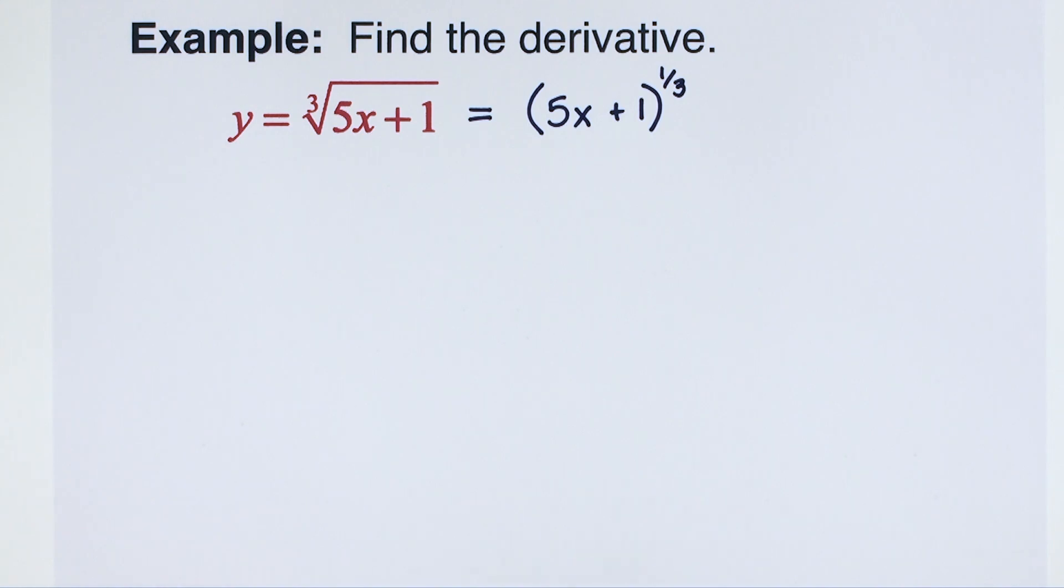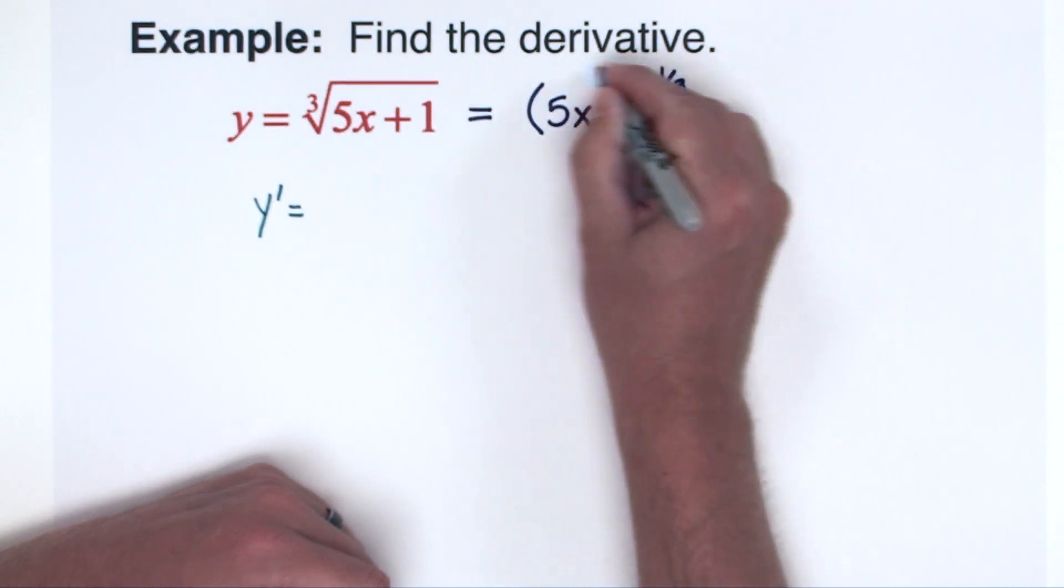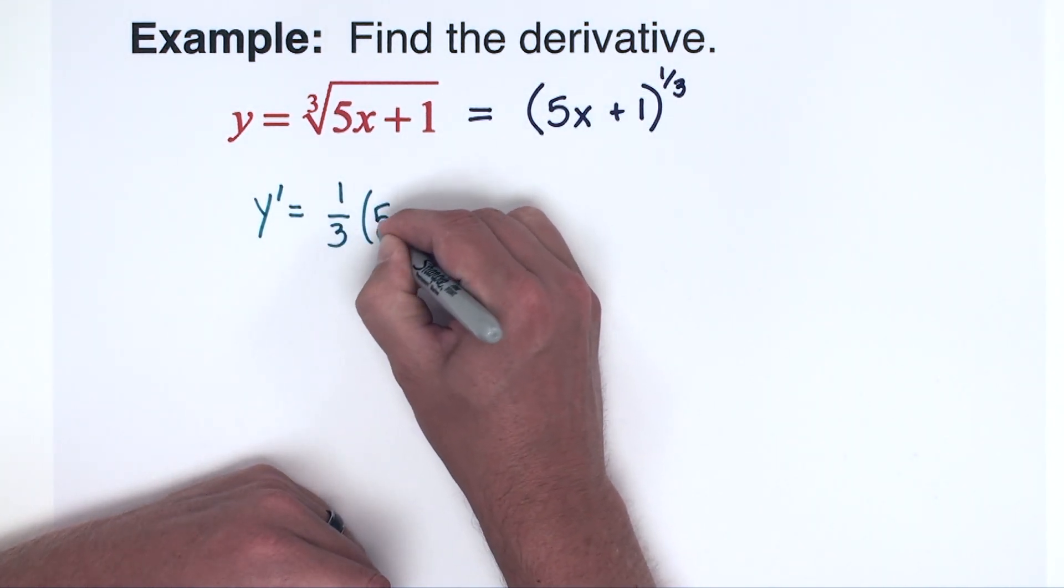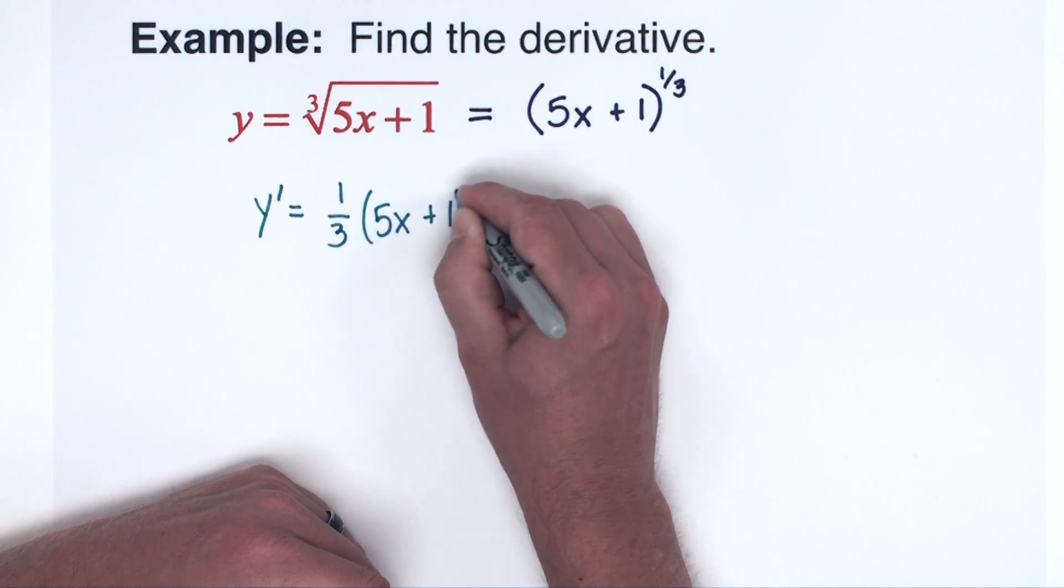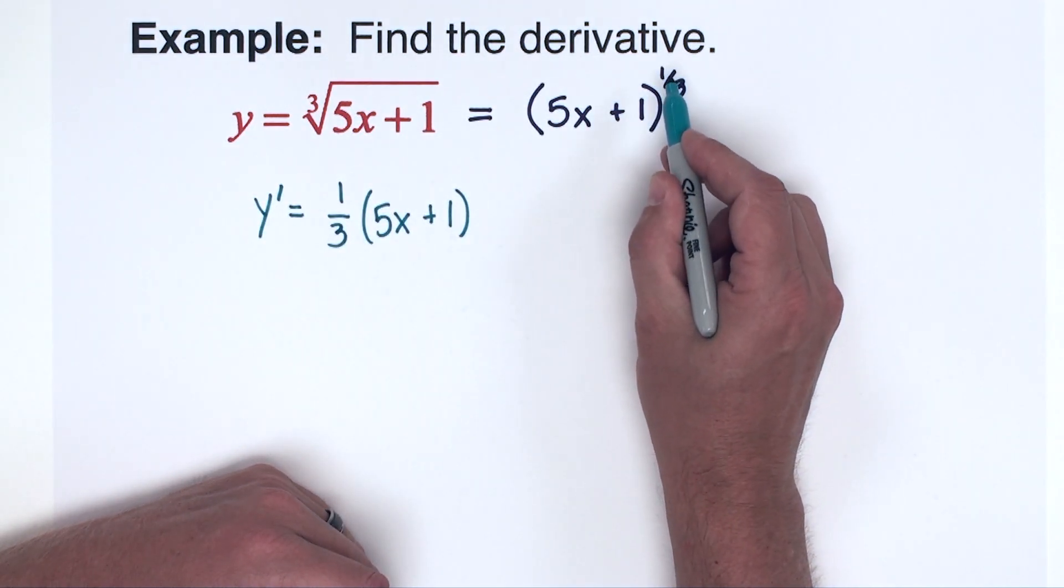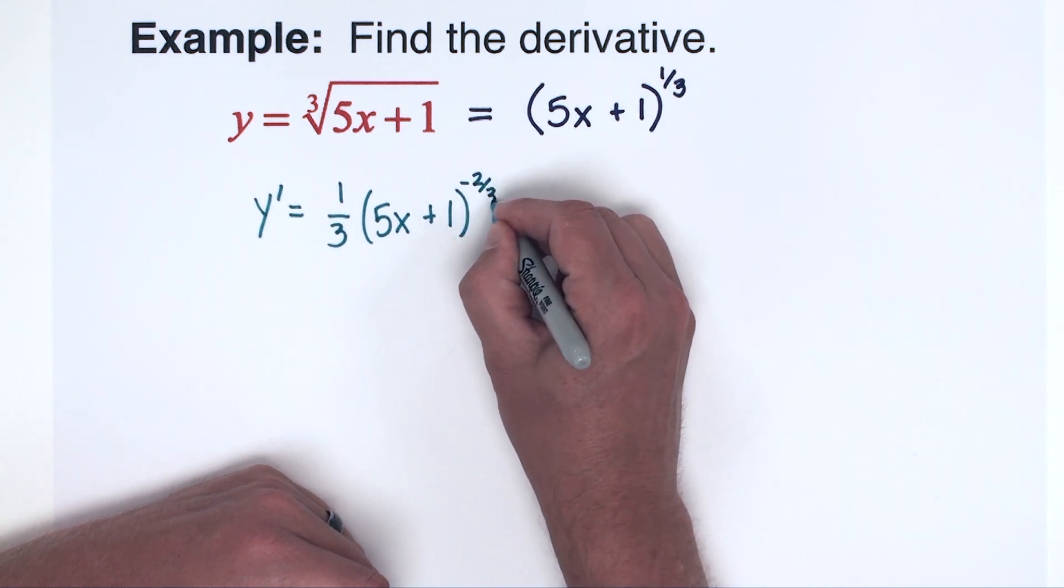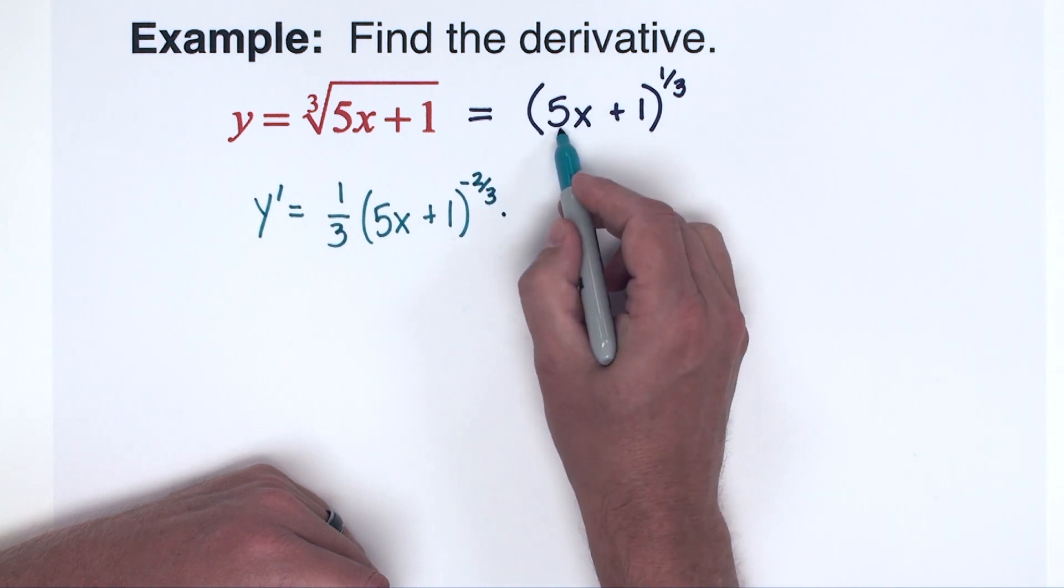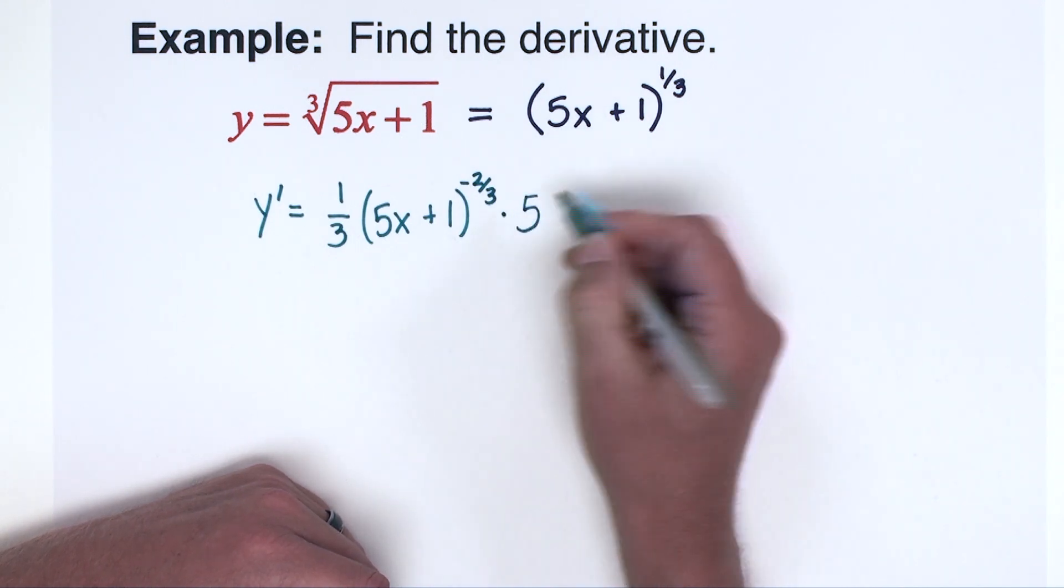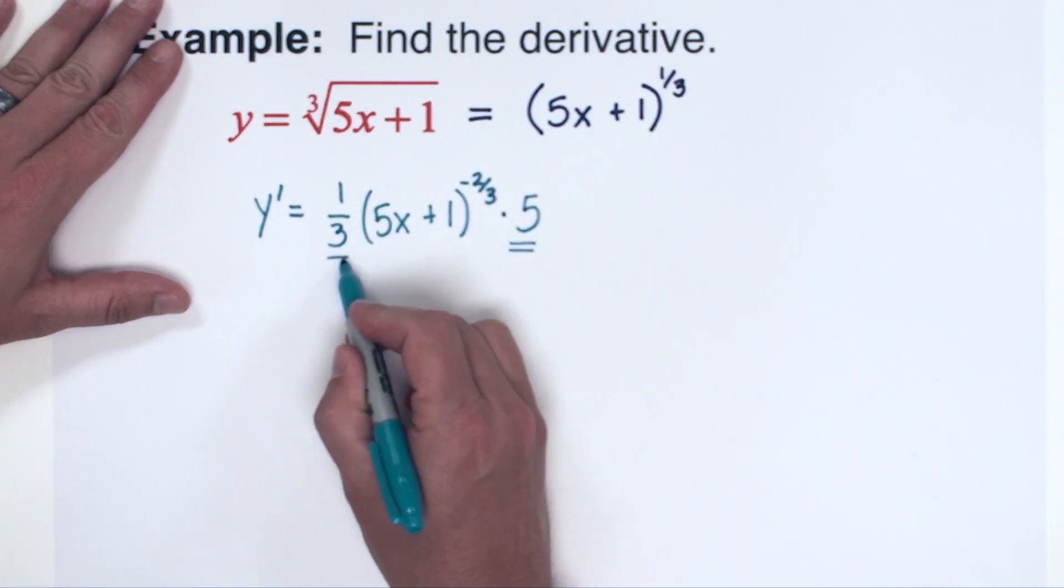I'm going to go ahead and do the chain rule now on that. Let's see, my y prime, I'm going to bring the 1/3 out to the front. Keep the inside. Take 1 off the power, so 1/3 minus 1 is negative 2/3. And now we're going to multiply that by the derivative of 5x plus 1, which is 5.